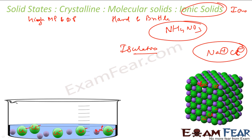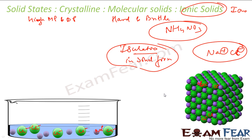So to summarize ionic solids: they have a very strong force of attraction due to real charges, making them hard and brittle with high melting and boiling points. Since there are no free electrons, they are insulators in solid form. But the moment you dissolve them in water or put them in the molten state, they will conduct electricity because free ions become available.